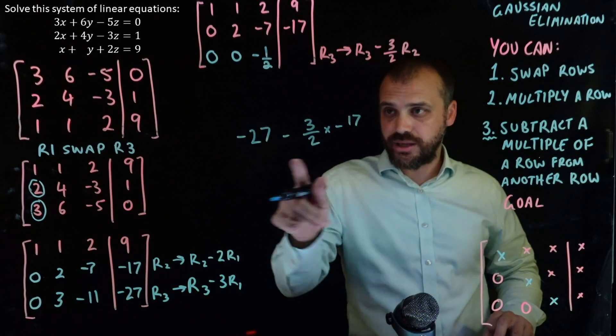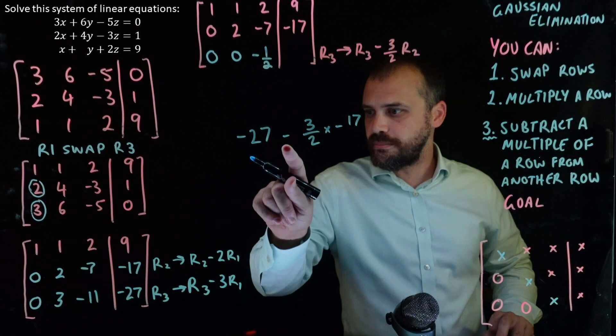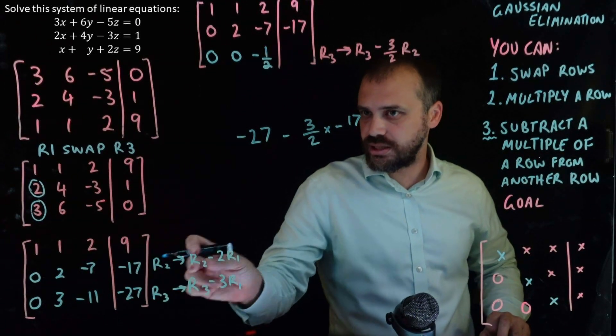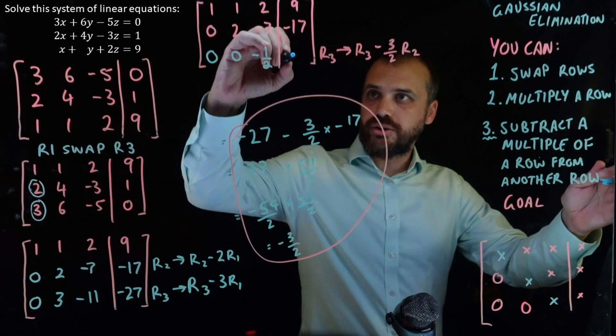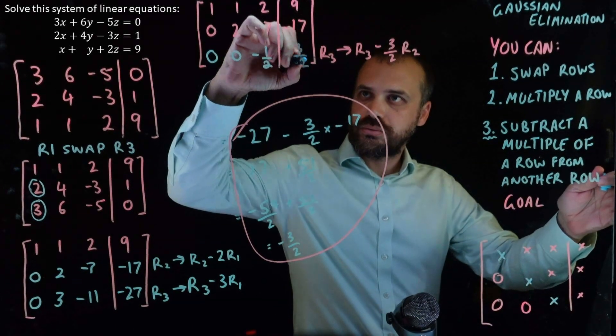Negative 27 minus 3 on 2 times negative 27. All right, equals negative 3 on 2.